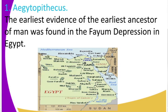There is a map as you can see here. On the lower side you can see Sudan, and as you move up we have Egypt. On the right side, there is a river, and along that river is where we have the Fayum Depression — that is where Aegipithecus was first discovered by archaeologists.